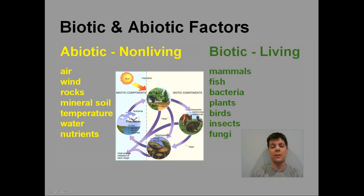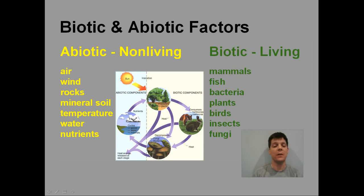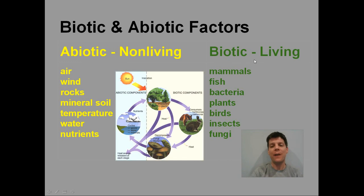When talking about ecosystems, we use the terms biotic and abiotic to describe the living and non-living factors present. Examples of abiotic, or non-living, factors include air, wind, rocks, mineral soil, temperature, water, and nutrients like nitrates or phosphates. Biotic factors are the living things present in an area — mammals, fish, bacteria, plants, birds, insects, and fungi are all examples of biotic factors found in ecosystems.